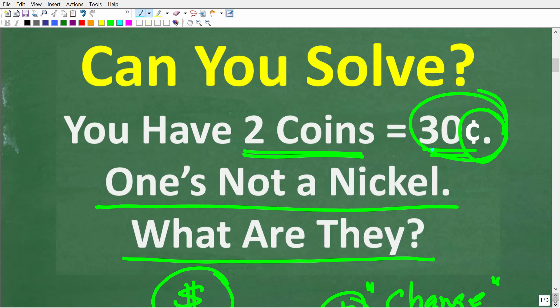So you have two coins and the value is 30 cents. One's not a nickel. It doesn't say that you can't have any nickels. So hopefully most of you picked up on this.